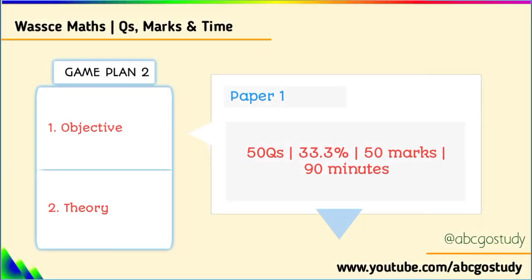I was talking about paper 1. Paper 1 is objective - that's 50 marks for 50 multiple choice questions, 1 mark for 1 question. But that does not mean the percent, so the percent is just 33.3%, and it is done in 90 minutes.